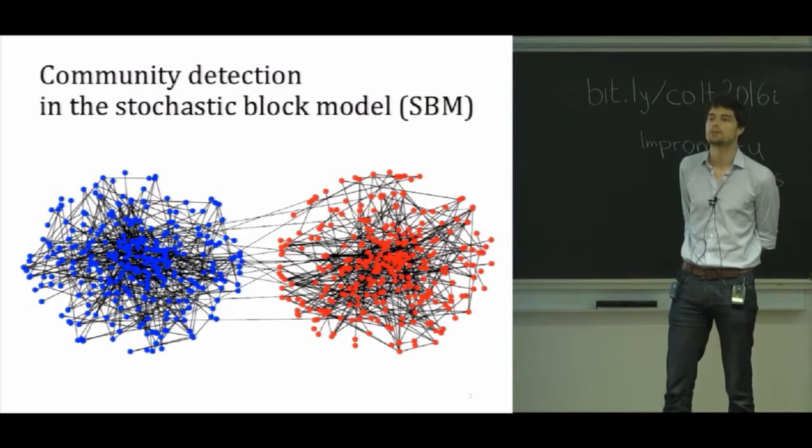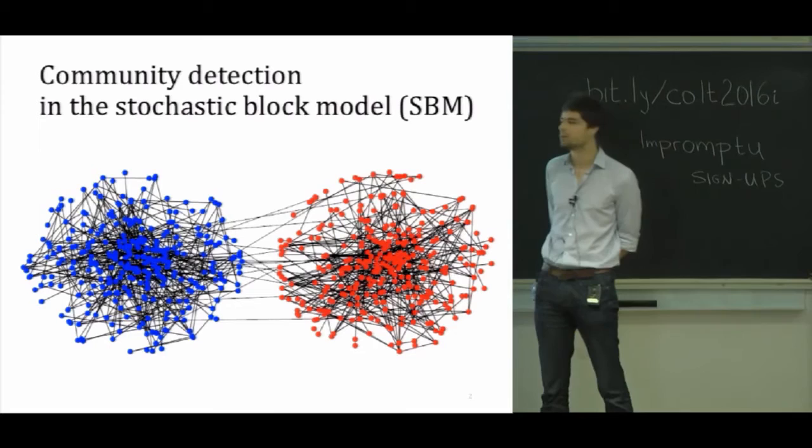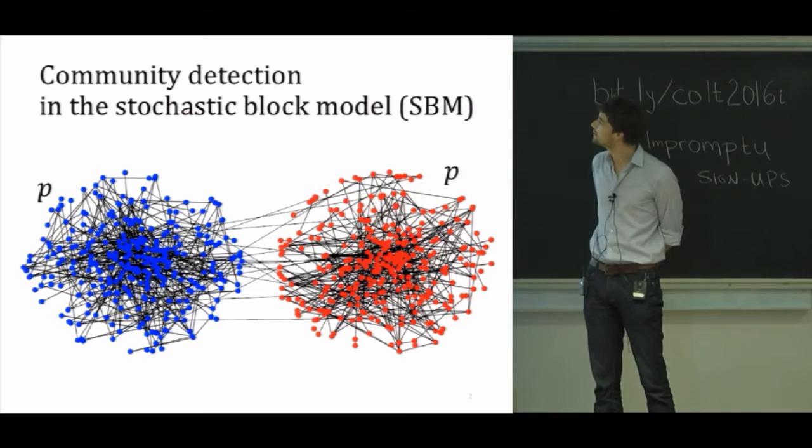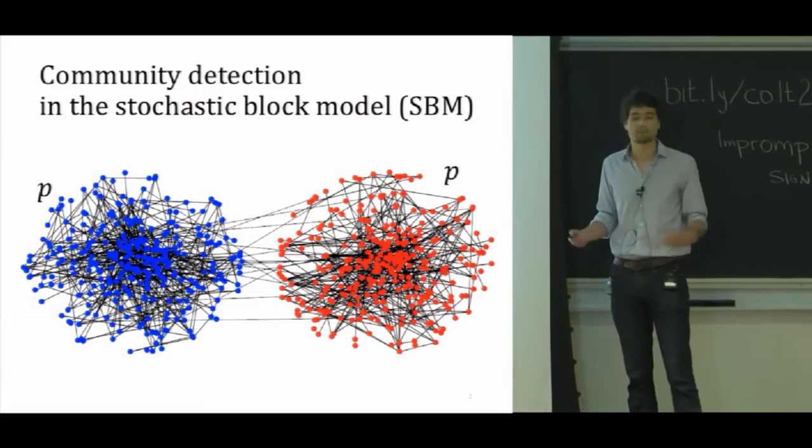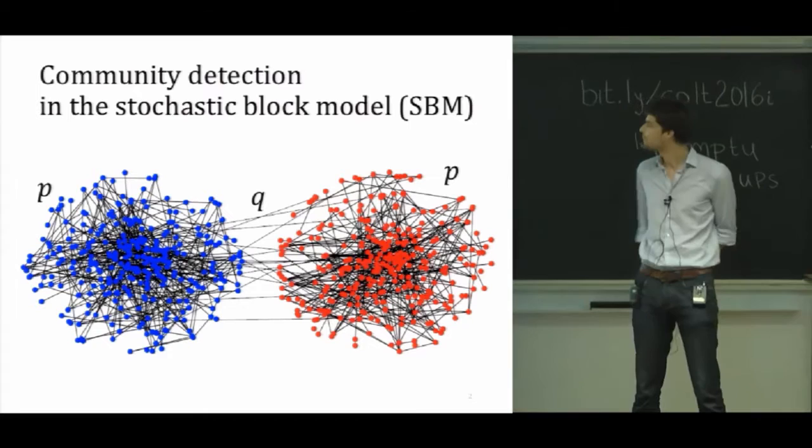The model is fairly simple. We consider that there is a collection of n objects, and exactly half of these objects are blue and the other half are red. And just like in a previous talk, there's going to be some edges between the objects. The probability that two objects of the same color are connected is P, and the probability that two objects of a different color are connected will be Q. And we think of Q as being smaller than P here.